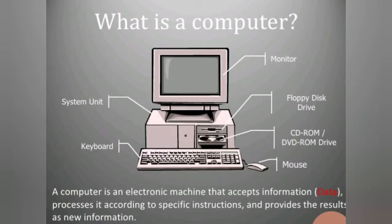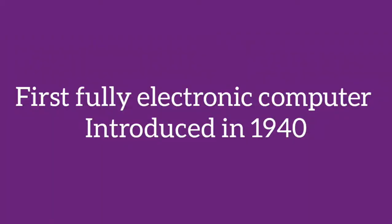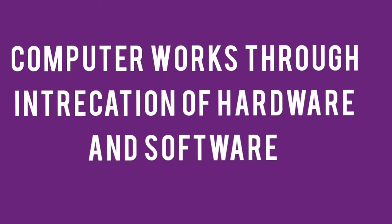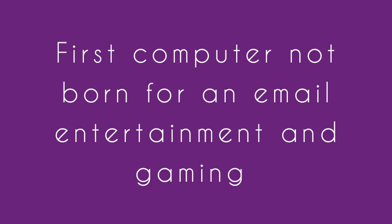First, a computer is a device that is able to do multiple tasks. Fully electronic computers were introduced in the 1940s. A computer is an interaction of hardware and software. The computer was not born for entertainment, games, or gaming purposes. It was created to solve serious number-crunching crises.